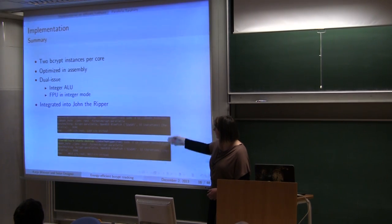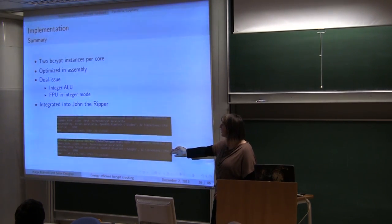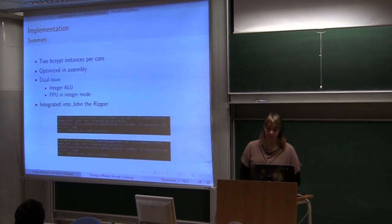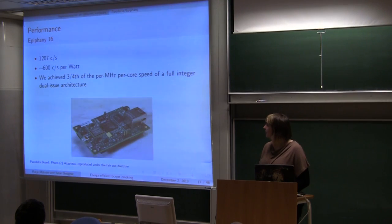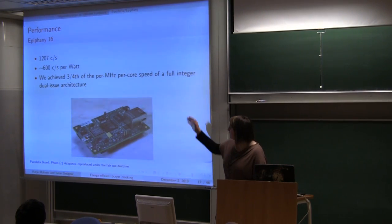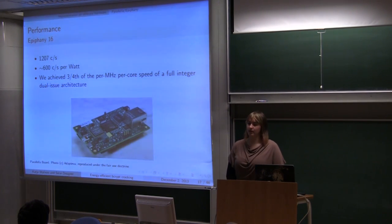So this is how it looks like. This is for Epiphany with 16 cores and for Epiphany with 64 cores. This is efficiency of architecture. It's 600 cracks per second per watt. Because Epiphany TDP is 2 watts.